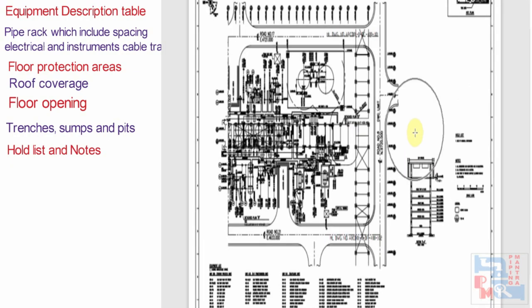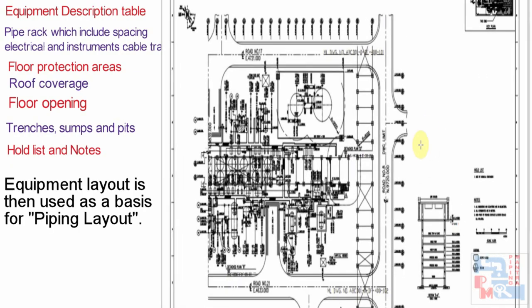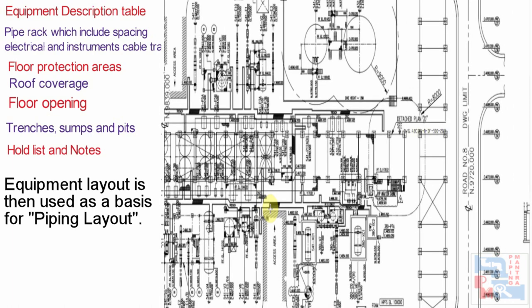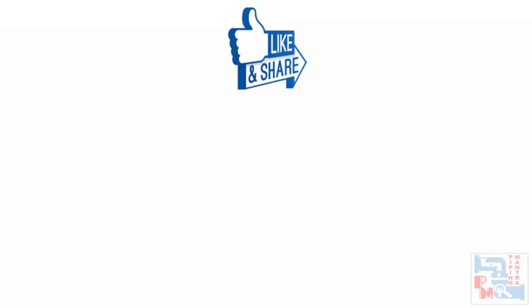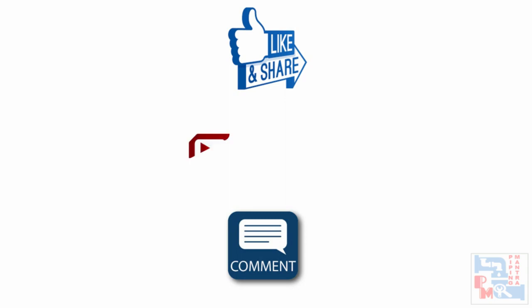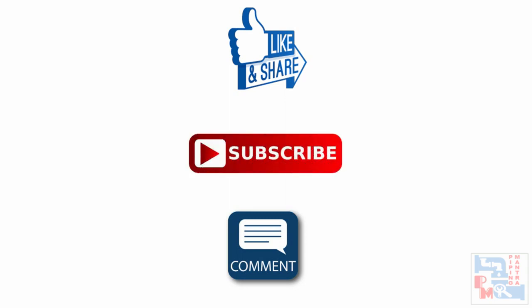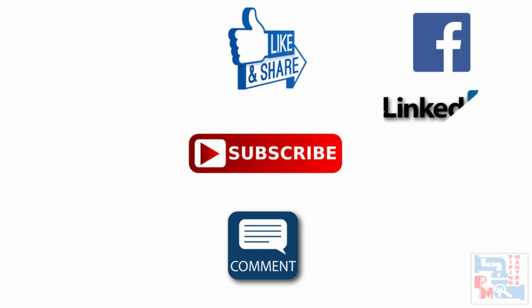That's all from our side on equipment layout. This equipment layout is then used for piping layout of that specific area. If you want to see what guidelines to follow while preparing piping layout, you can click on the window here. To see the video on P&ID, click here. To see all other videos, click here. Please write in the comment section your opinion on this video — any suggestions and requests are welcome. Soon we will be releasing a series of short videos, so please hit like, subscribe, and share. Till then, bye-bye, stay safe.